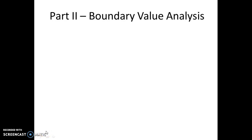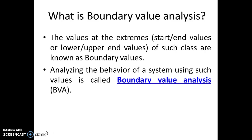In part 1 we covered equivalence partitioning, and in part 2 we will cover boundary value analysis. Boundary value analysis is an extension of equivalence partitioning. The values at the extreme start and end — the lower and upper end values of a class — are called boundary values. Analyzing the behavior of the system using such values is called boundary value analysis, or BVA in short.